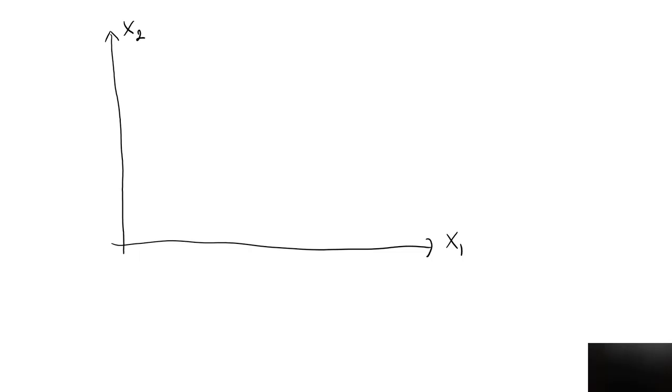To show that two indifference curves cannot intersect when the weak preference relation is total, I will draw two different indifference curves that do intersect, and show that the weak preference relation cannot be total in that case.